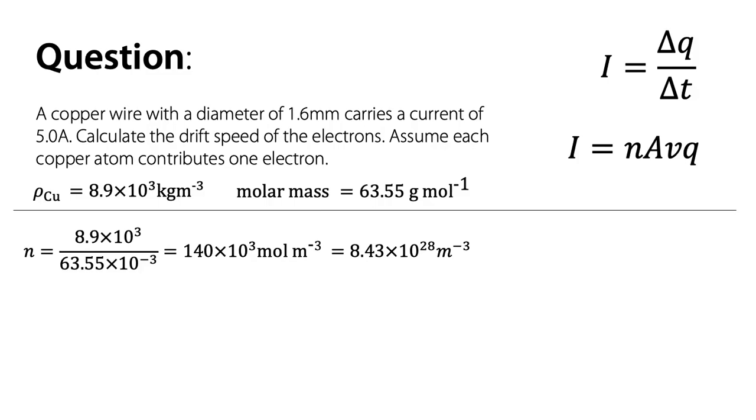So that is 8.43 × 10²⁸ actual atoms. Multiplying the number of moles per meter cube by Avogadro's constant will give you the number of atoms per meter cube: 8.43 × 10²⁸ is the number of atoms per meter cubed, and we've said that each atom donates one electron, so 8.43 × 10²⁸ electrons per meter cubed. That is n.